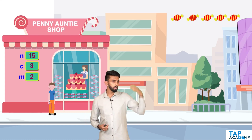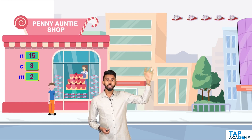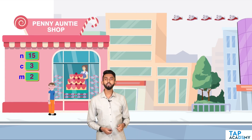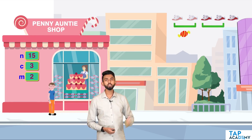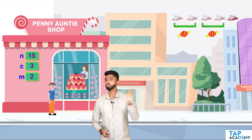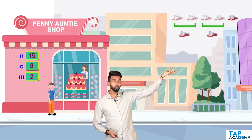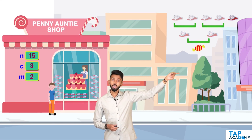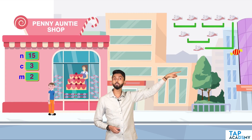Bobby is very hungry and will eat all 5 chocolate bars, giving him 5 wrappers. He takes the first 2 wrappers to Penny Auntie and gets 1 bar free, then the next 2 wrappers for another 1 — with 1 wrapper left over that he can't exchange yet. Now he has 2 new chocolates; he eats them for 2 more wrappers, giving 3 total. He exchanges 2 more, eats that chocolate, and with the remaining wrappers gets one final chocolate.